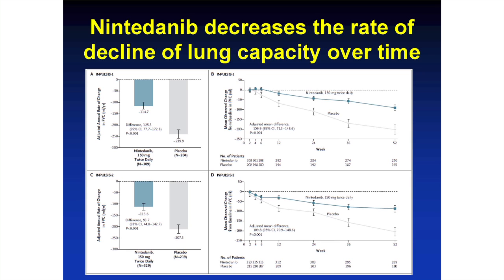The results were similar to those of the pirfenidone study. Looking at lung volume with nintedanib versus placebo, we found that the decrease in lung function in patients receiving nintedanib was less when compared to patients who got the placebo. With time on the x-axis and lung function on the y-axis, patients who received the drug had a lower decrease in lung function — a consistent result across both studies.